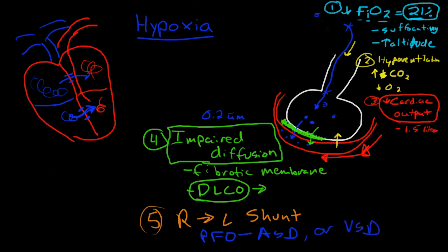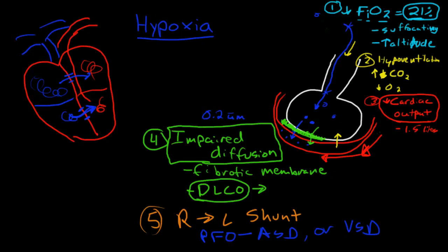It could be a ventricular septal defect or VSD. And this is an anatomic shunt that causes the blood from the right side of the heart to mix with the left side of the heart.